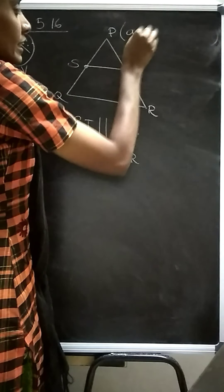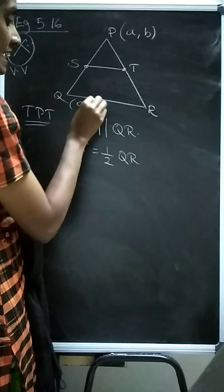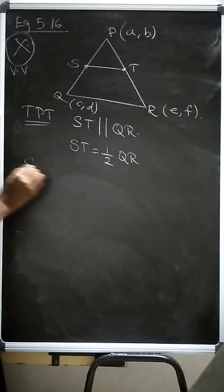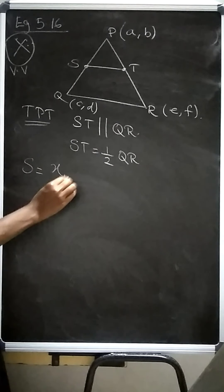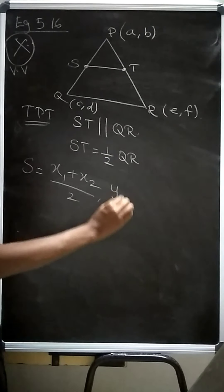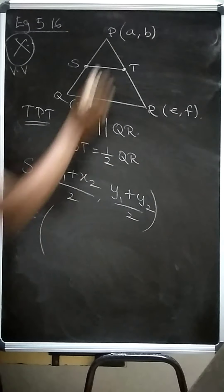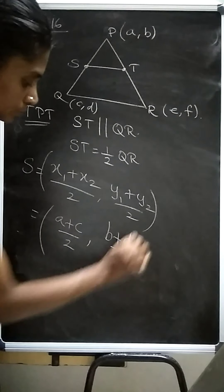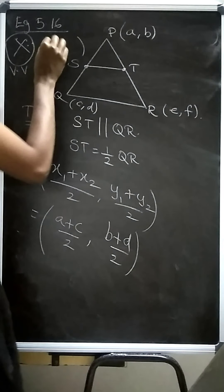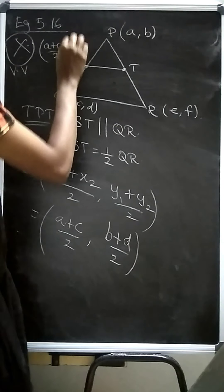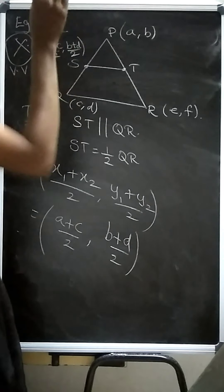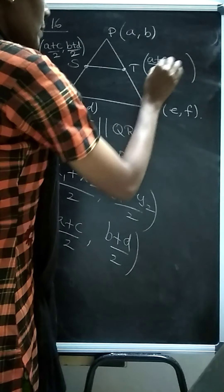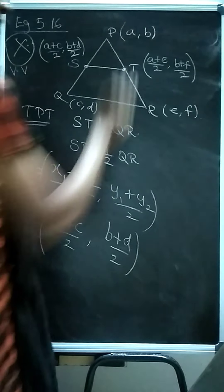Let vertex P be (a, b), vertex Q be (c, d), and vertex R be (e, f). S is the midpoint of PQ. Using the midpoint formula — (x1 + x2)/2, (y1 + y2)/2 — substituting, S = ((a+c)/2, (b+d)/2). Similarly, T is the midpoint of PR, so T = ((a+e)/2, (b+f)/2).